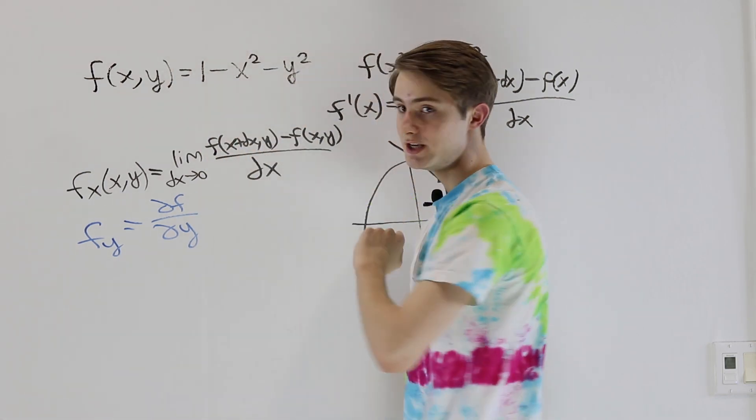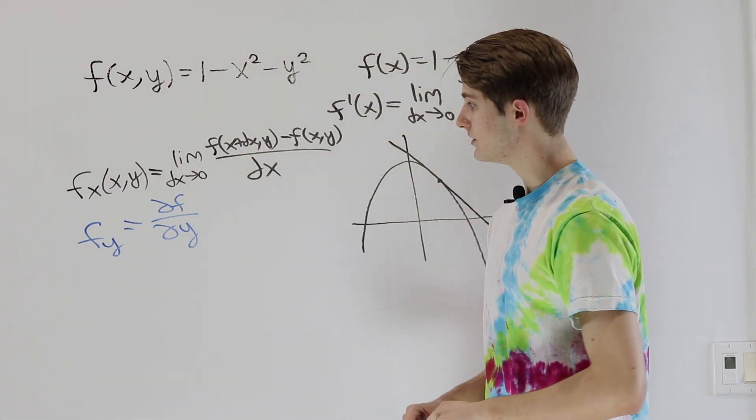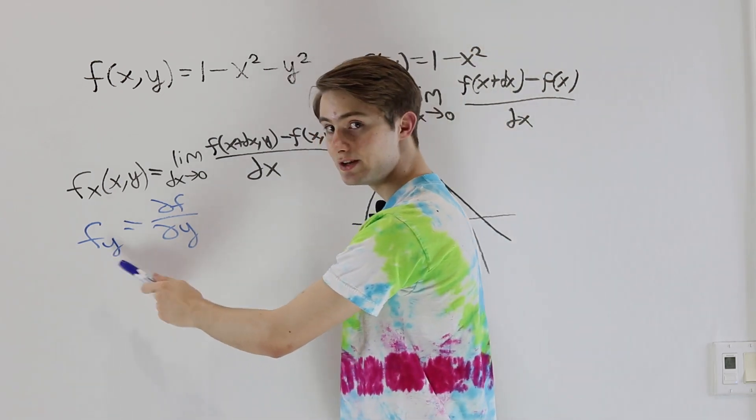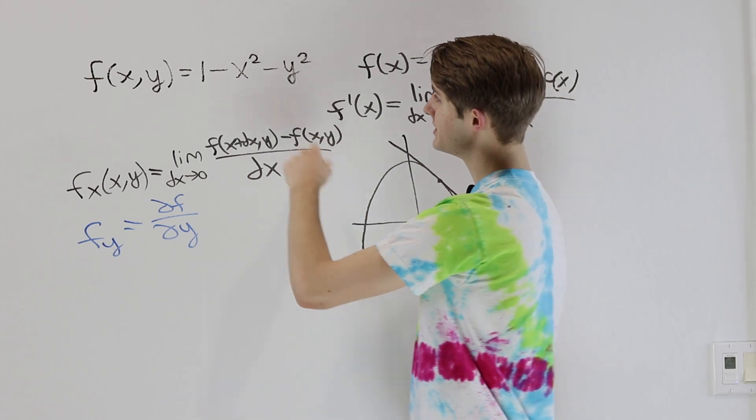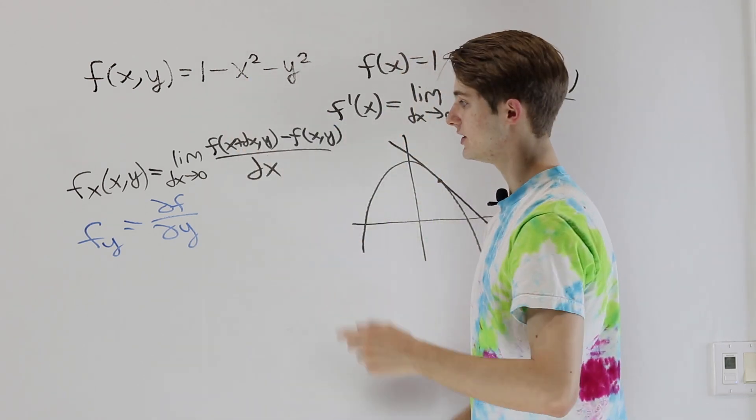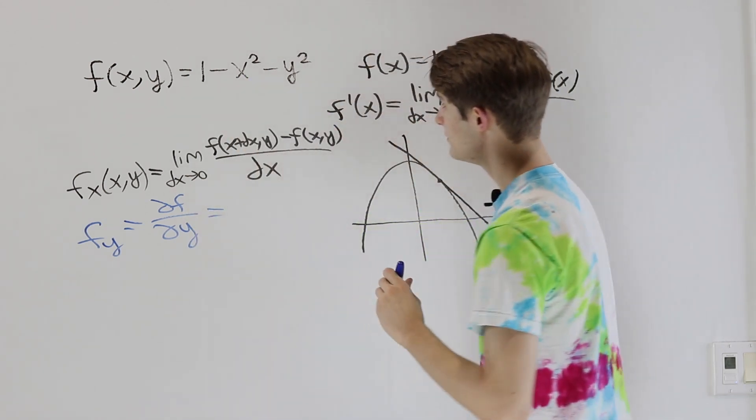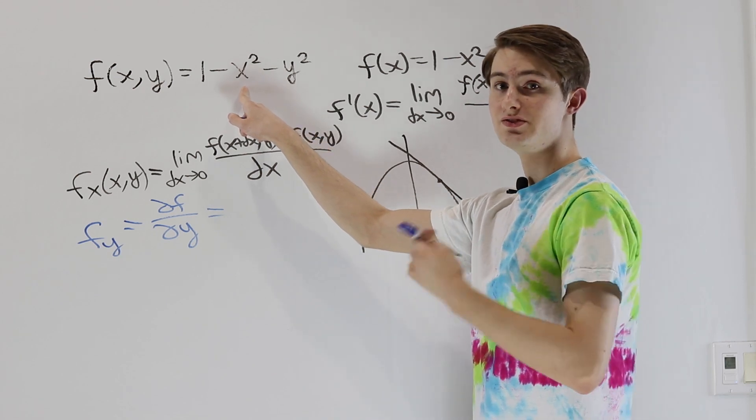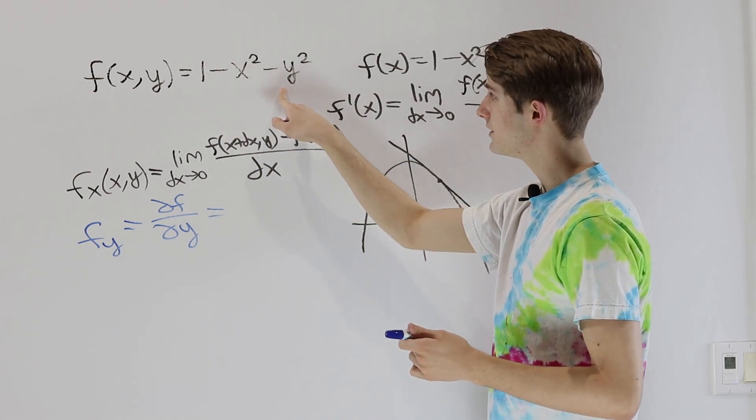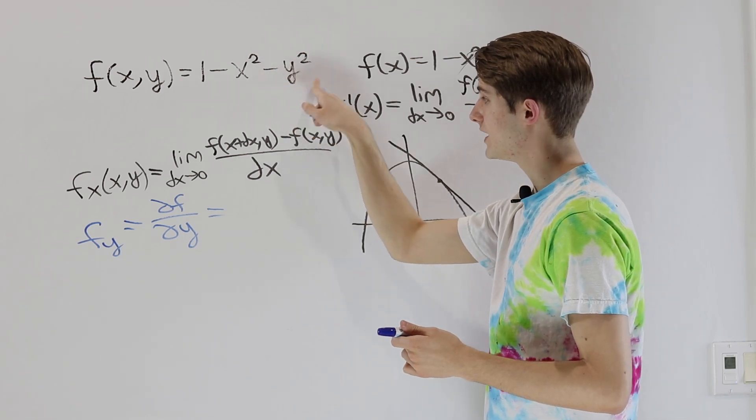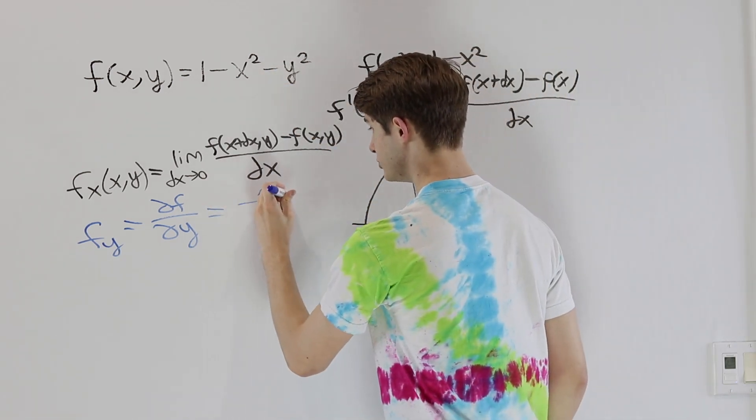If we want to do that with our function here, remember with a partial derivative, we say everything that's not y is a constant. So 1 was already a constant, but in this case x is also a constant. So when we do this derivative, the derivative of a constant is 0, and therefore this part goes away and this part goes away. All we're left with is the derivative of negative y squared, which is negative 2y.